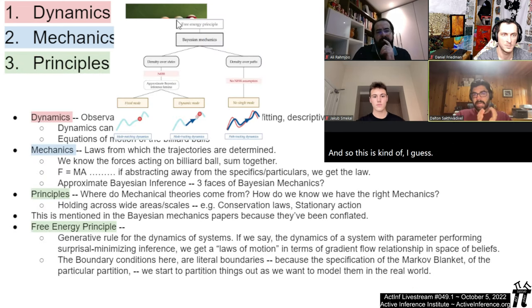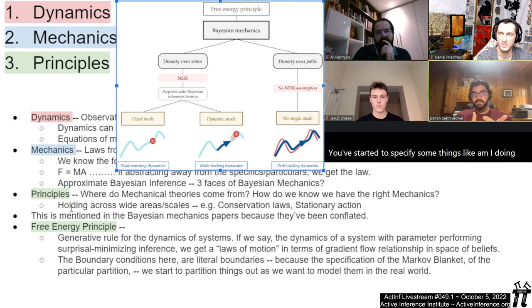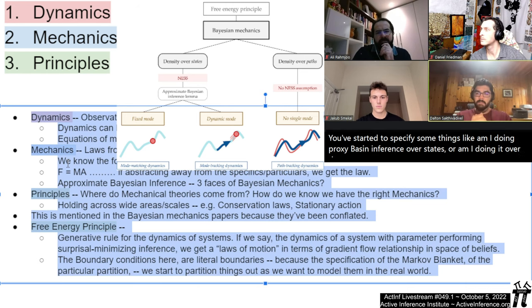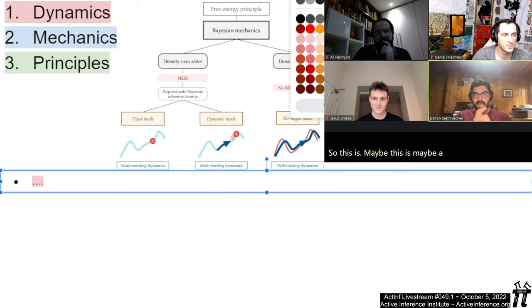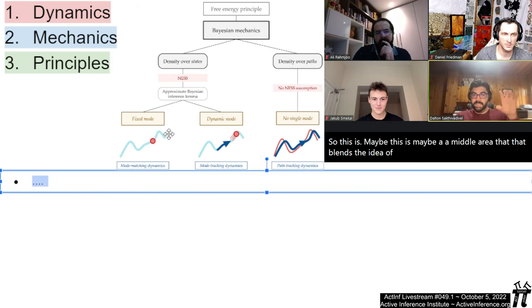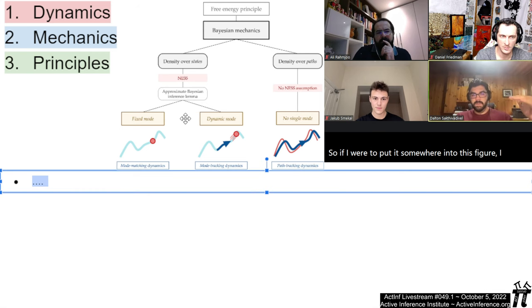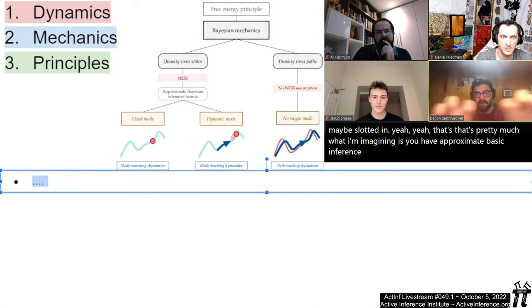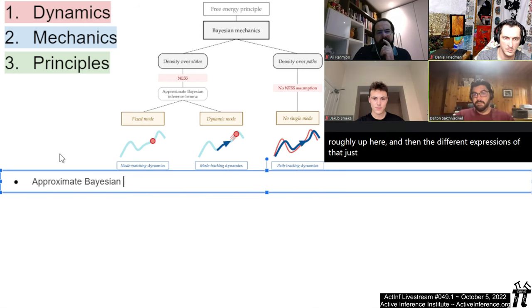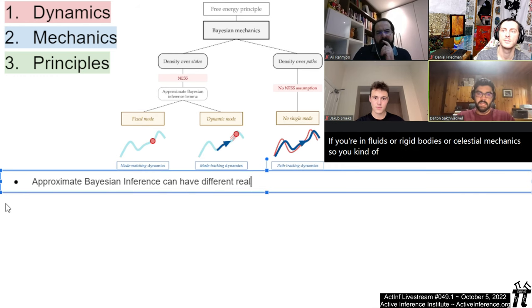This is a middle area between dynamics and mechanics. You've started to specify some things, like whether I'm doing approximate Bayesian inference over states or over paths, but you're still lacking actual dynamical details about what those states or paths mean. It blends the idea of approximate Bayesian inference as a law of motion under surprise minimization and actually getting down to the very bottom of this pyramid. Just as there are different expressions of Newton's laws depending on whether you're in fluids, rigid bodies, or celestial mechanics, you can introduce even finer partitions than these three.